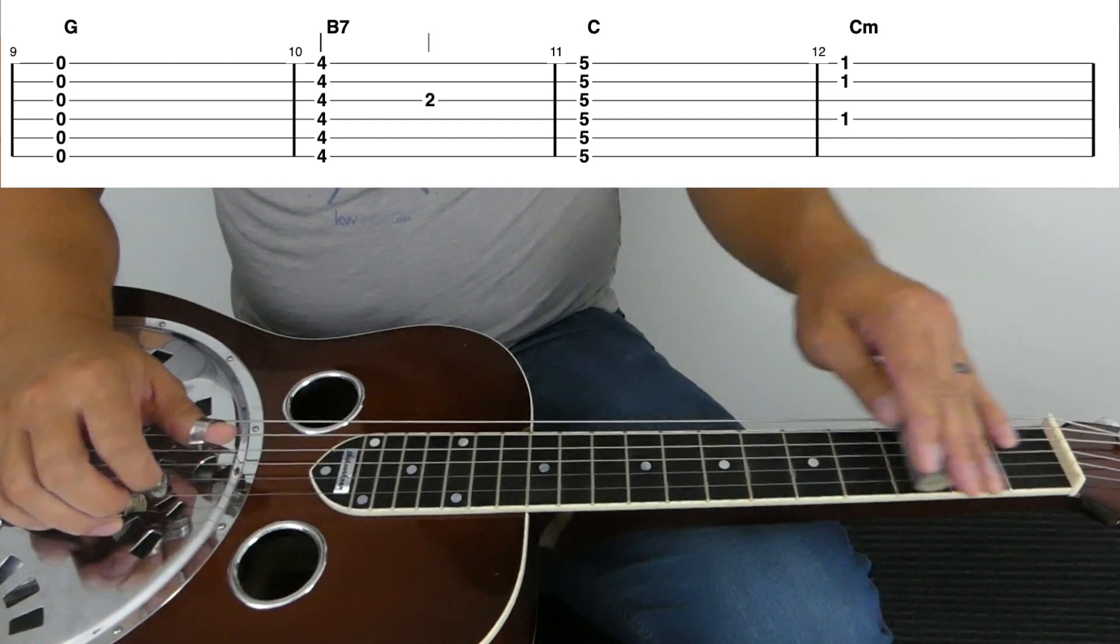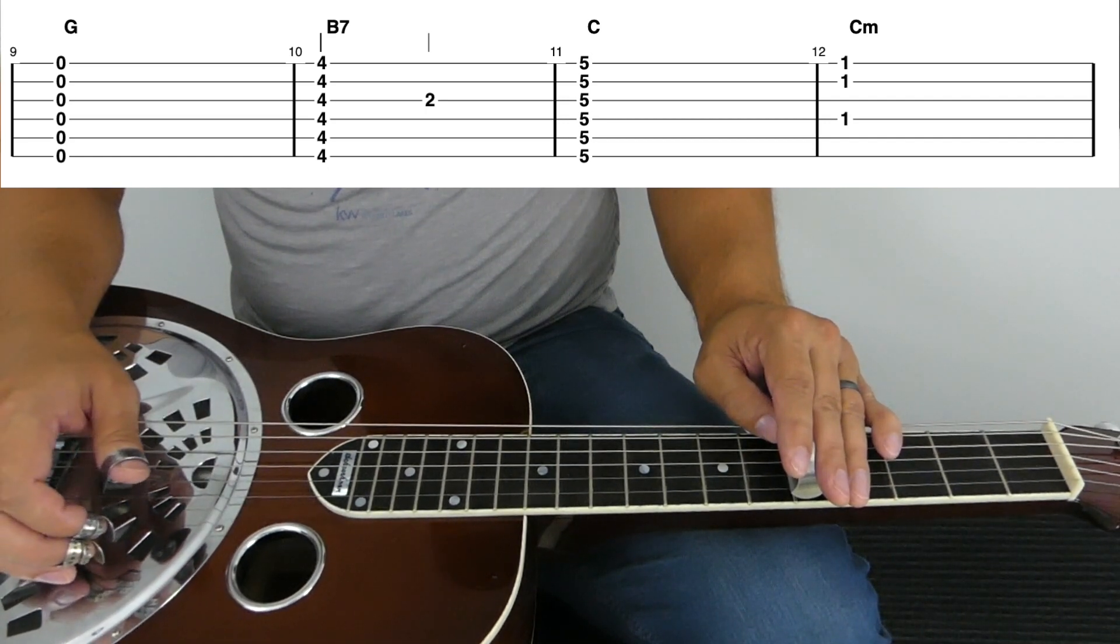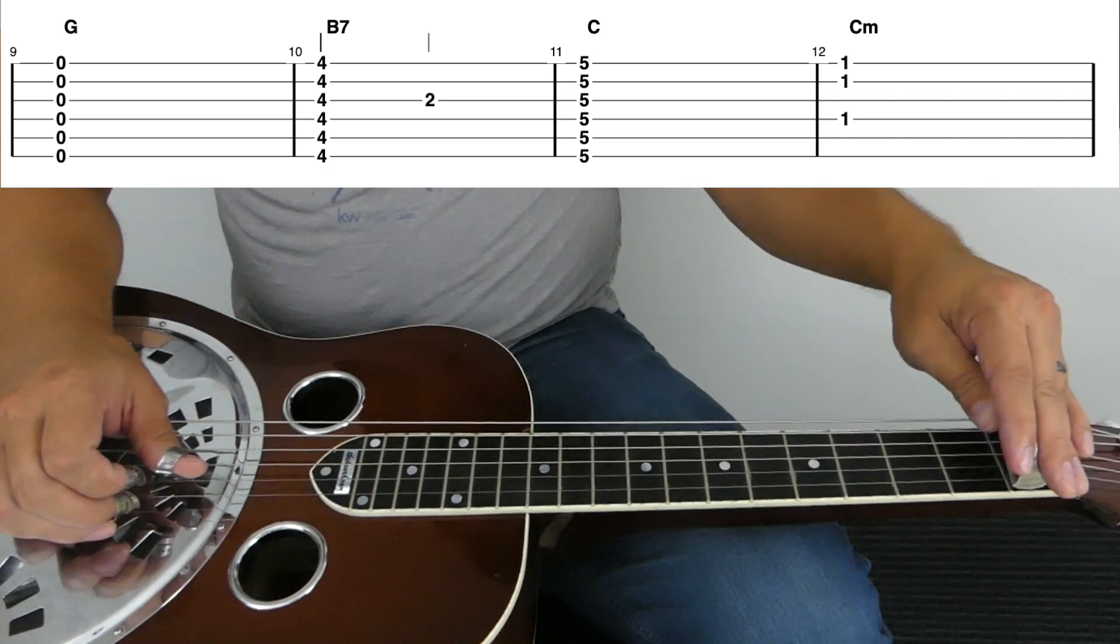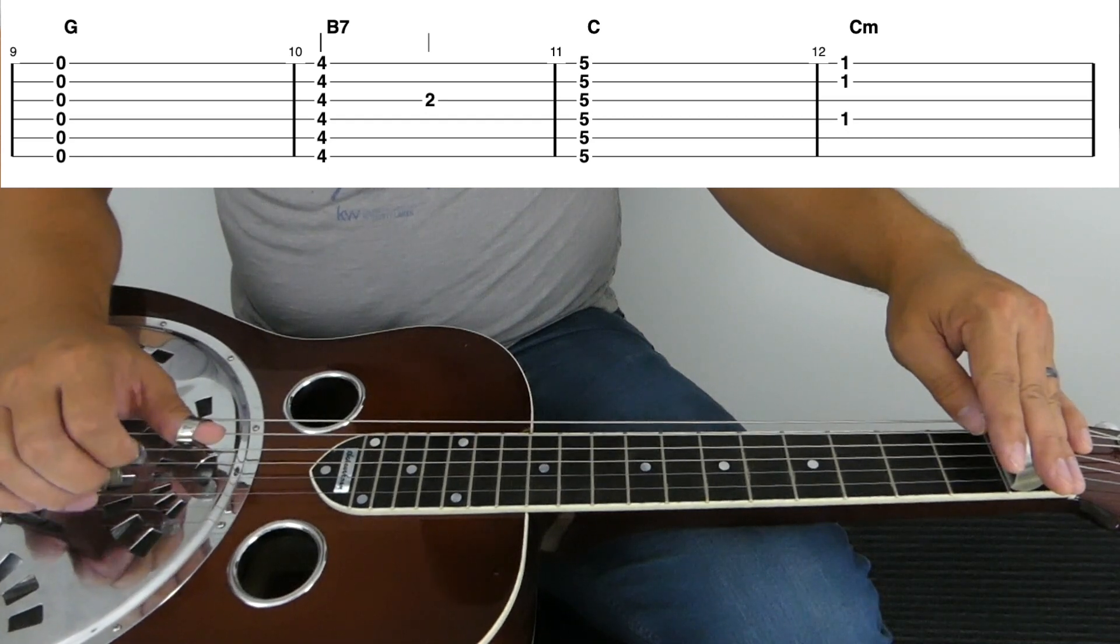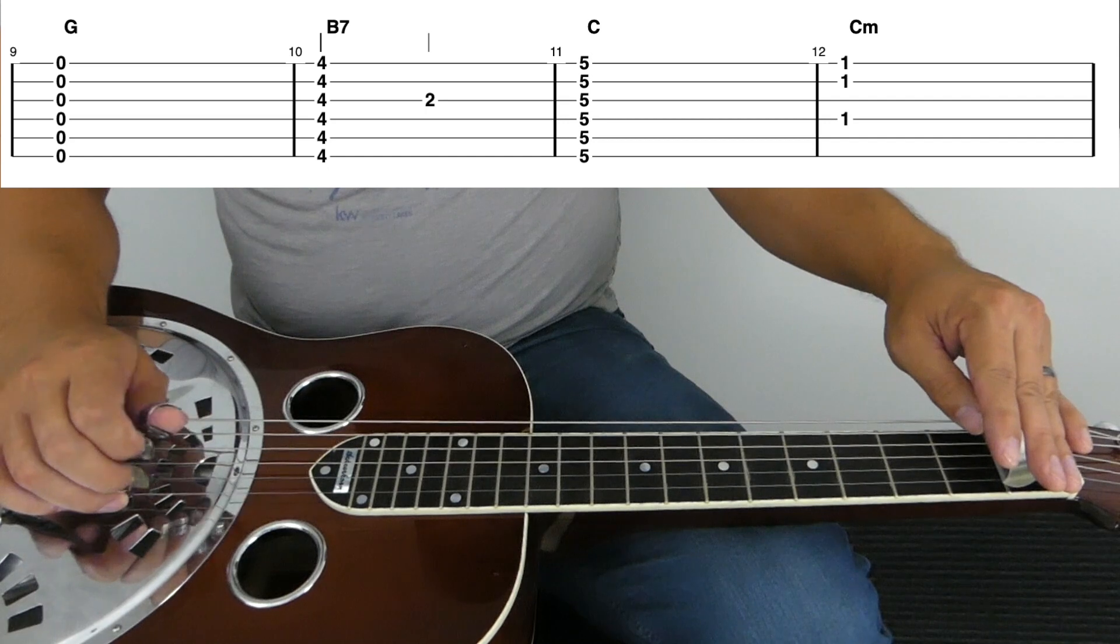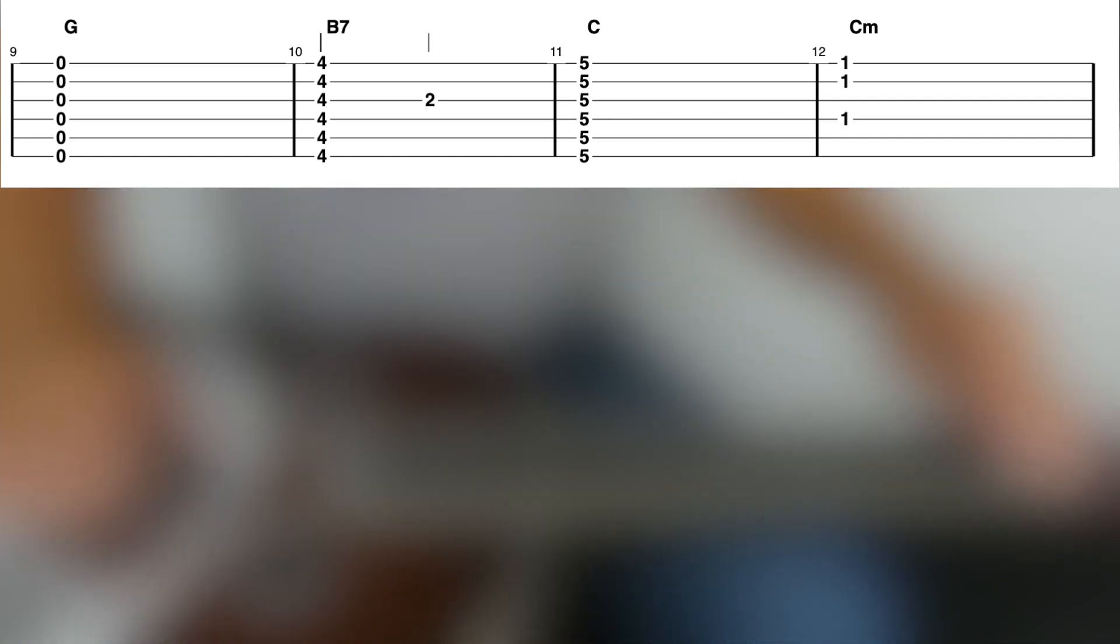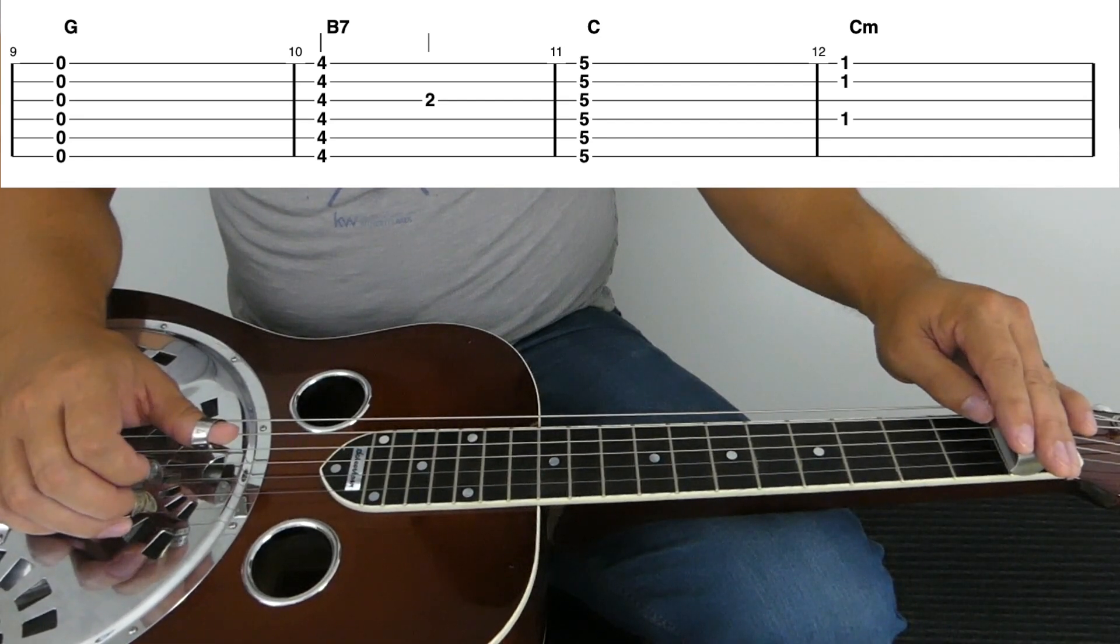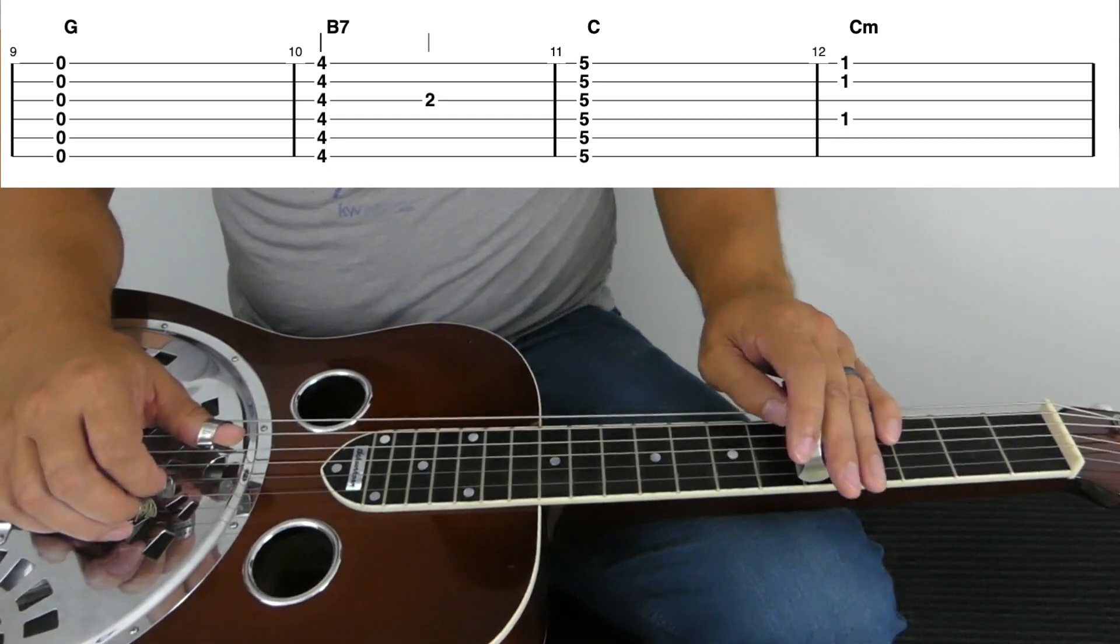So one way to do this is if you know your home base, your C home base is the fifth fret, you go down one, two, three, four frets, and if you play these specific three strings, or just the top two, or any combination of them, it could be the second and the fourth string as well, depending on how many notes you want to play. But this pass, I just did the fourth string, second string, and first string. I'm just down four frets from my C major chord.